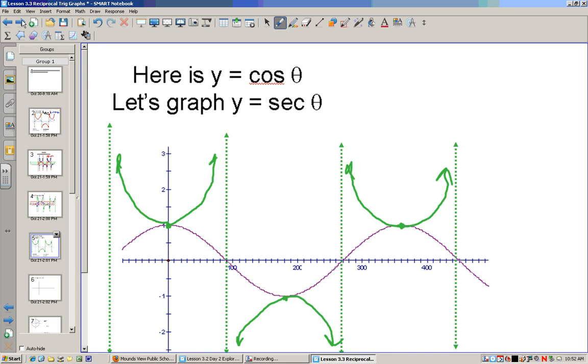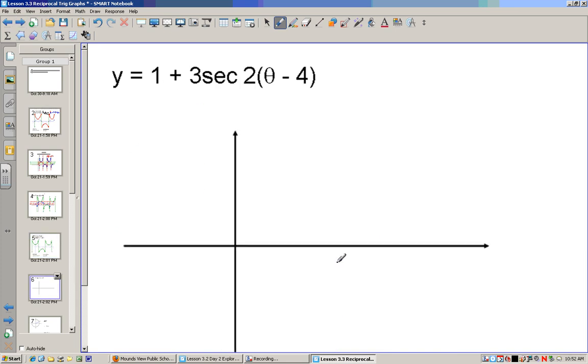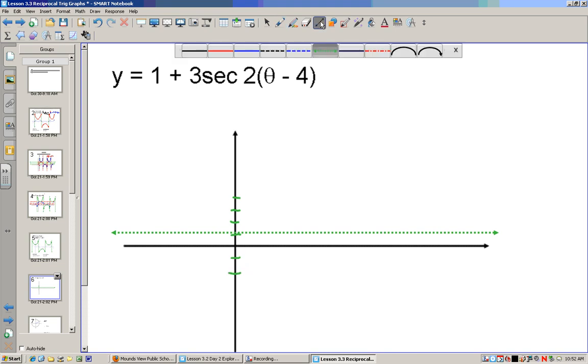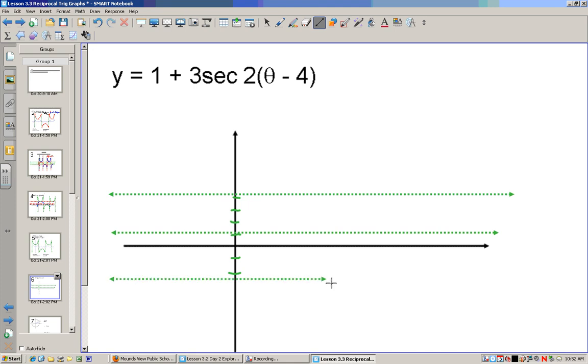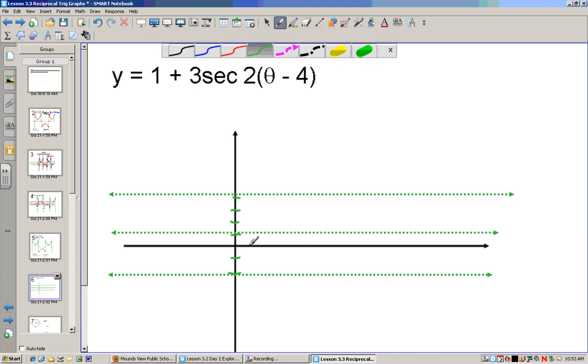So now let's do that for 1 plus 3 secant of 2 theta minus 4. So pause the video and try this on your own. So first I graph the sinusoidal axis, the upper bound, and the lower bound.